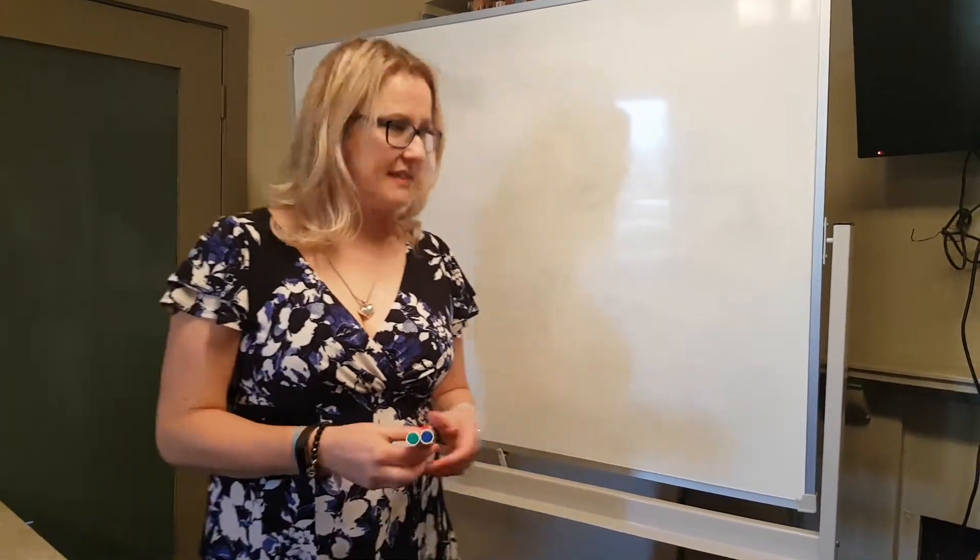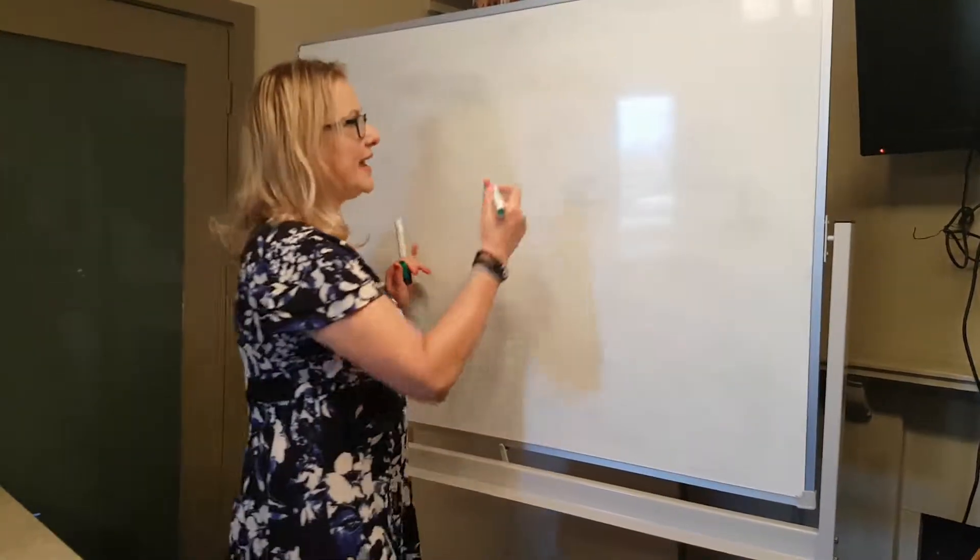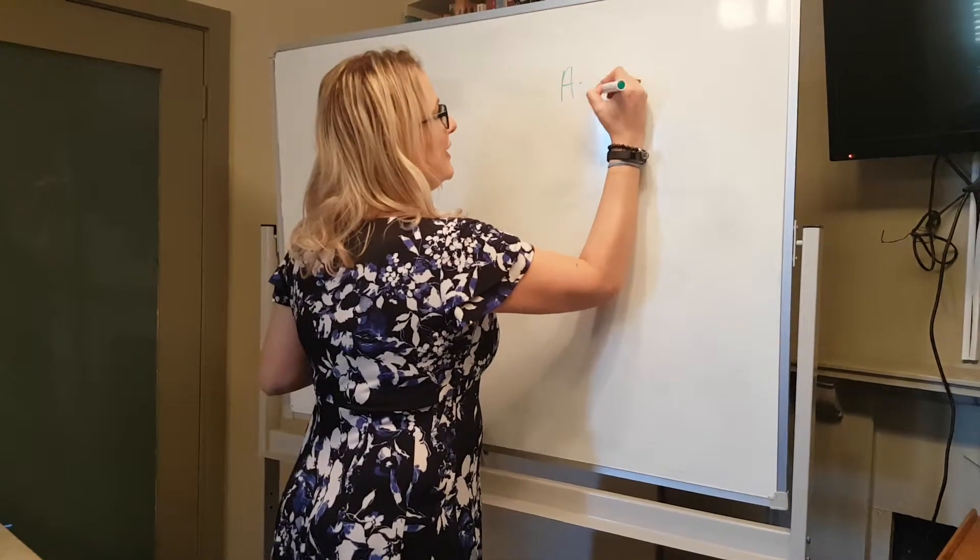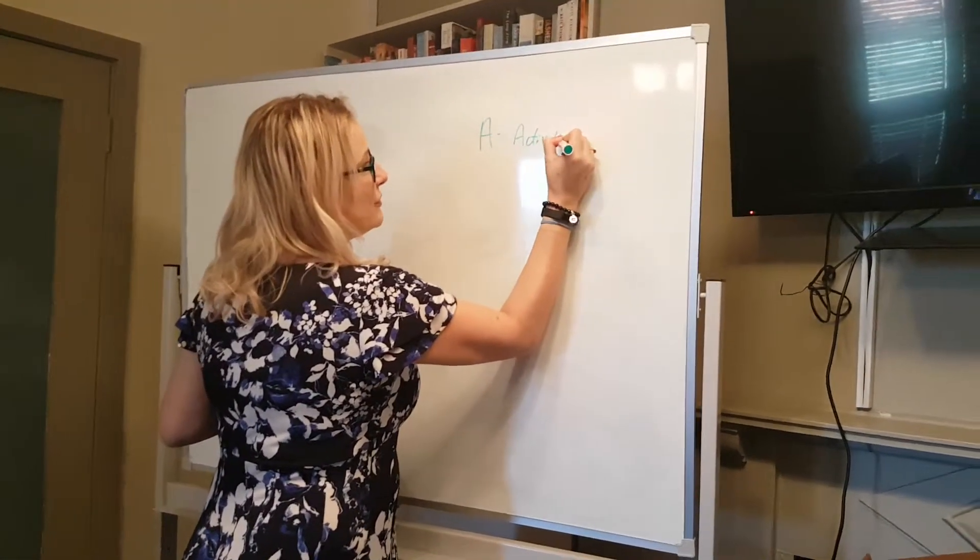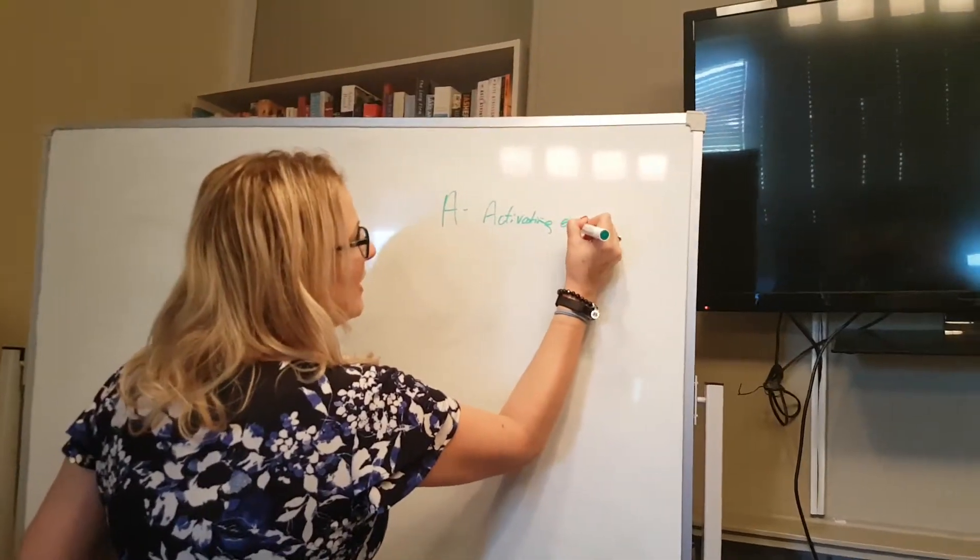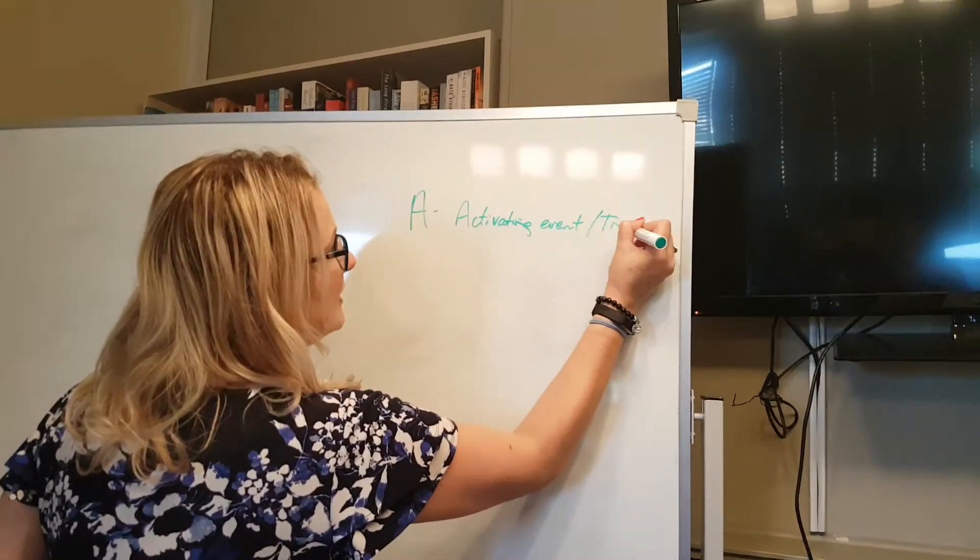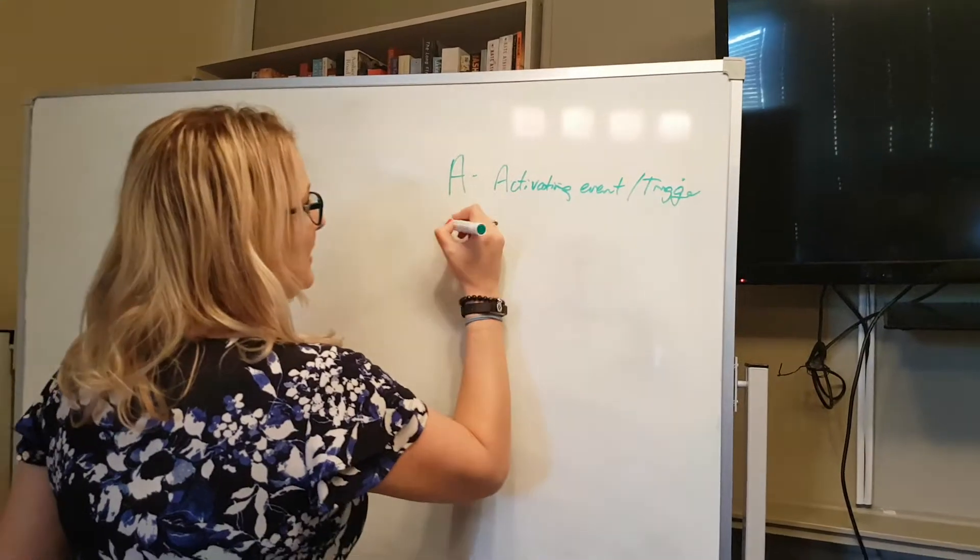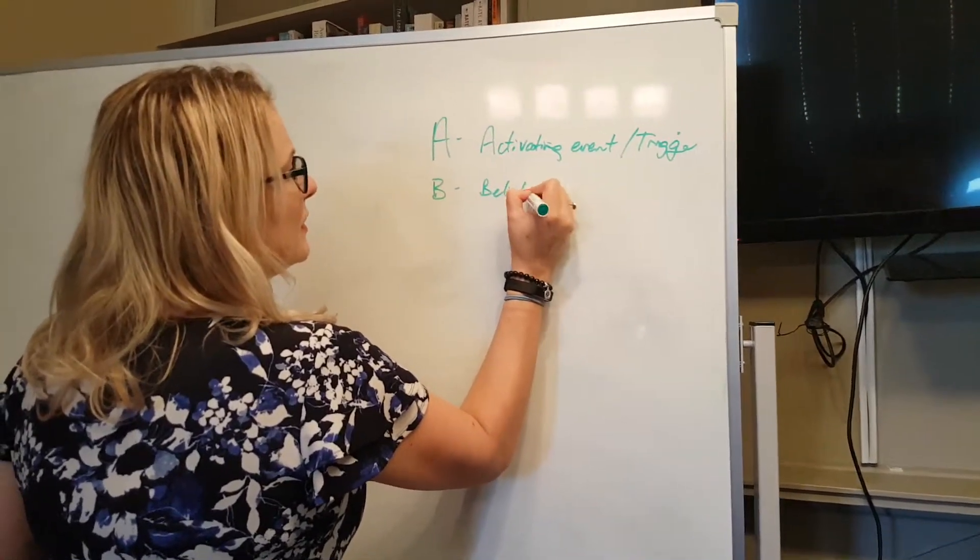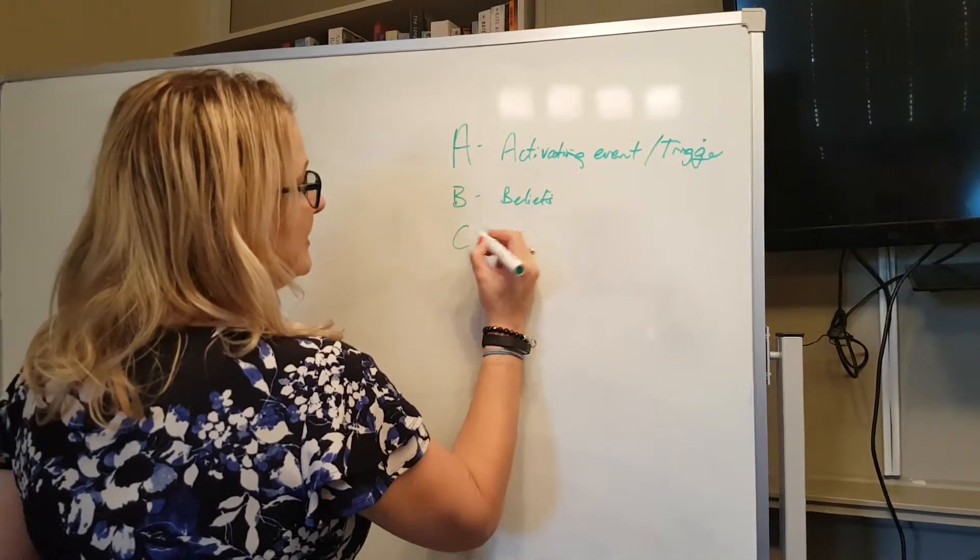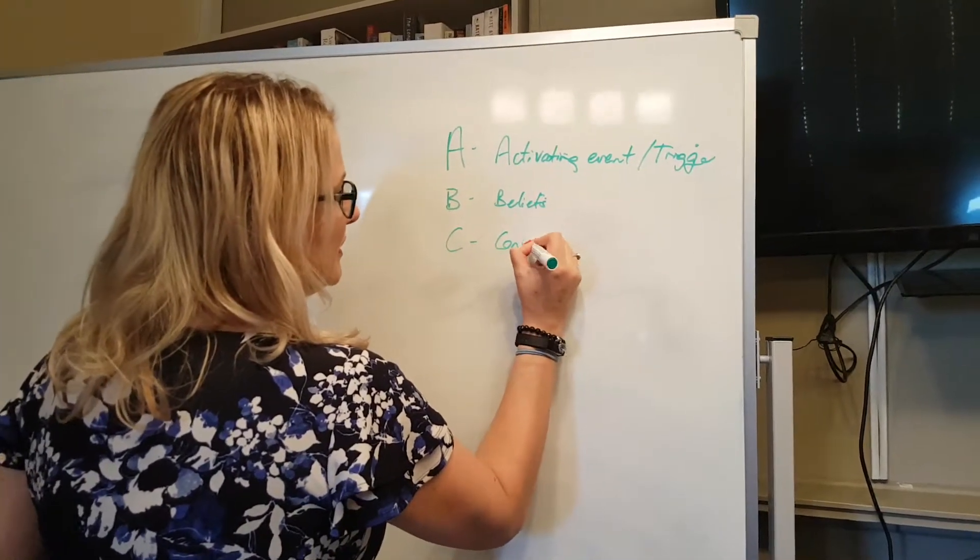The ABC of stress: A is for the activating event or the trigger, and B is for the belief that lies hidden under C, which is the consequent emotion.